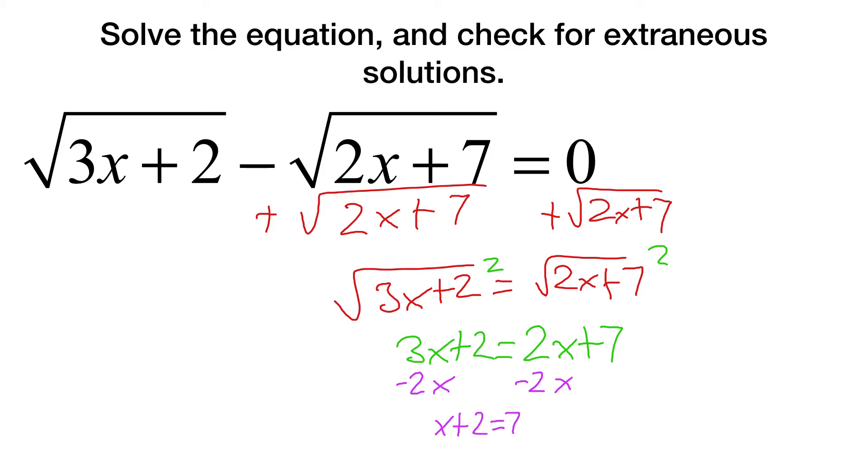At which point, I'm going to take away 2x from each side. x plus 2 is 7. Then I'm going to subtract 2. x is 5. At which point, since x is 5, I put this in square root of 15 plus 2. Let's rewrite this a little bit smaller. Square root of 15 plus 2 is 17 minus 2 times 10 is 10. 2 times 5 is 10 plus 7 is also 17 equals 0. Is the square root of 17 minus itself 0? Yes it is. So we're good. Yay!